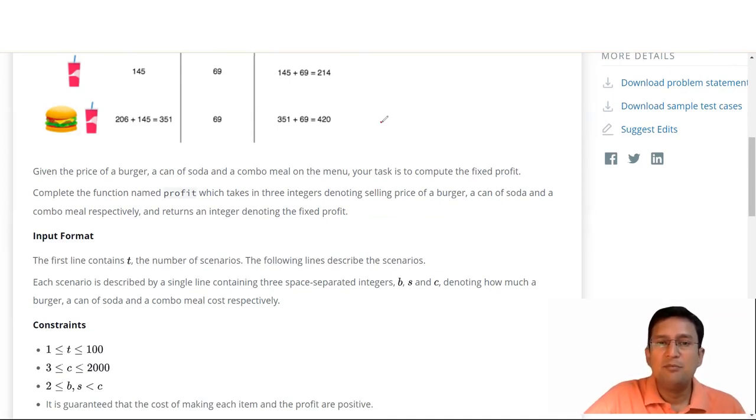Let's say cost price of burger is b and cost price of soda is s. Selling price of burger will be cost price plus fixed profit, or b plus p. Selling price of soda, that will be s plus p. Given as x, given as y, and the combo will be b plus s plus p. The selling price of combo is given as z.